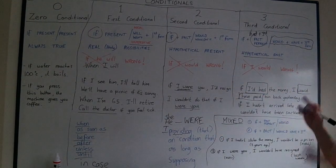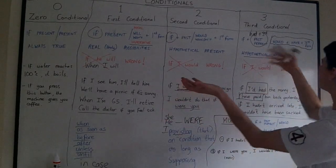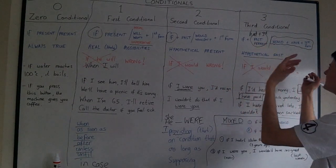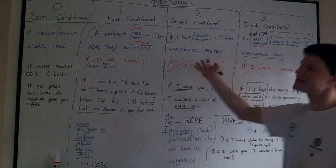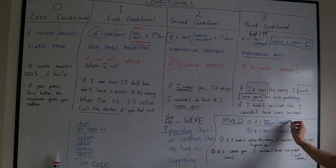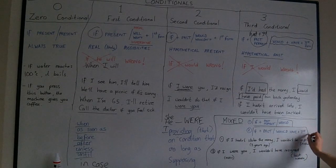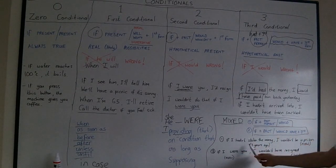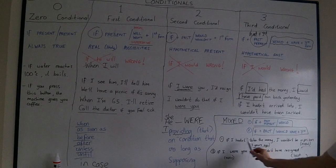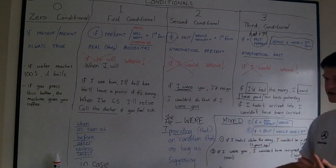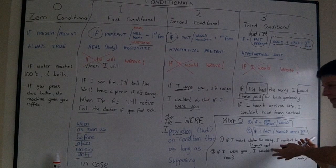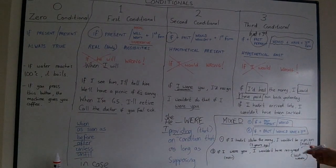Sometimes we could have something hypothetical in the present having past consequences, hypothetical consequences, and the opposite. Sometimes we can have something hypothetical in the past having hypothetical present consequences. Let me show you. And we have two different formulas for this because that's two different types of situations. So look at number one. If I hadn't stolen the money three years ago, I wouldn't be in prison now. That is a past situation, a past hypothetical situation, because I did steal the money. If I hadn't stolen the money, I wouldn't be in prison now with present consequences, hypothetical consequences.